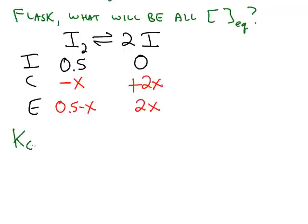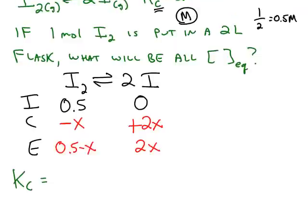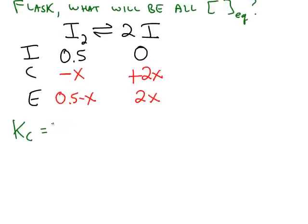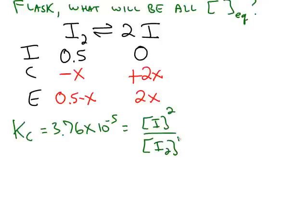Next, we're going to use the value of Kc, which was given as 3.76 times 10 to the negative 5th. And that equals the concentration of the product at equilibrium squared divided by the concentration of the reactant to the first.